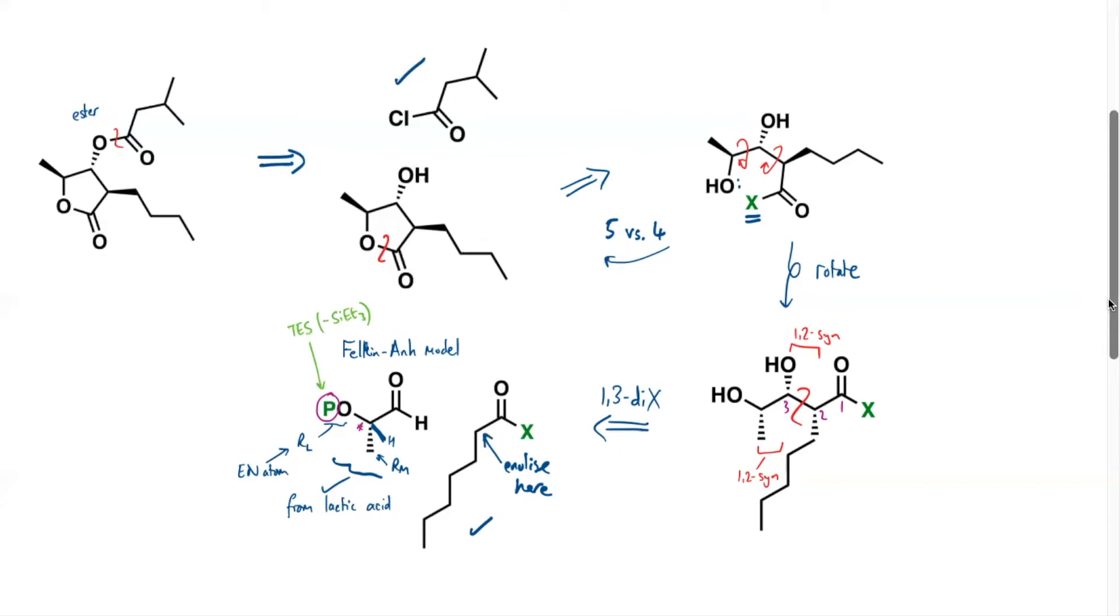Okay, so we've seen that there's a Felkin-Ahn preference, and it's in fact the correct Felkin-Ahn preference for just any enolate attacking that aldehyde. So any attack on that aldehyde will set the correct 1-2-syn stereocenters over here, but the 1-2-syn relationship across the newly forming carbon-carbon bond we need to think a bit more carefully about. One technique that we could use here is if we invoke some sort of cyclic transition state, so using a Zimmerman-Traxler type model.